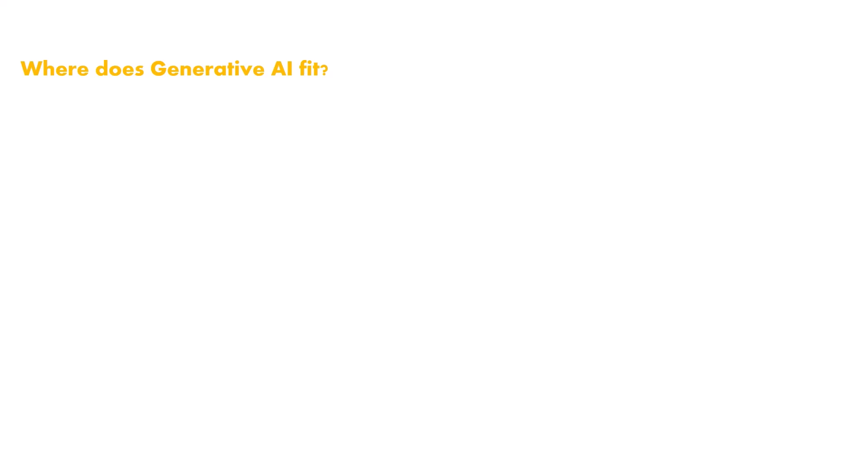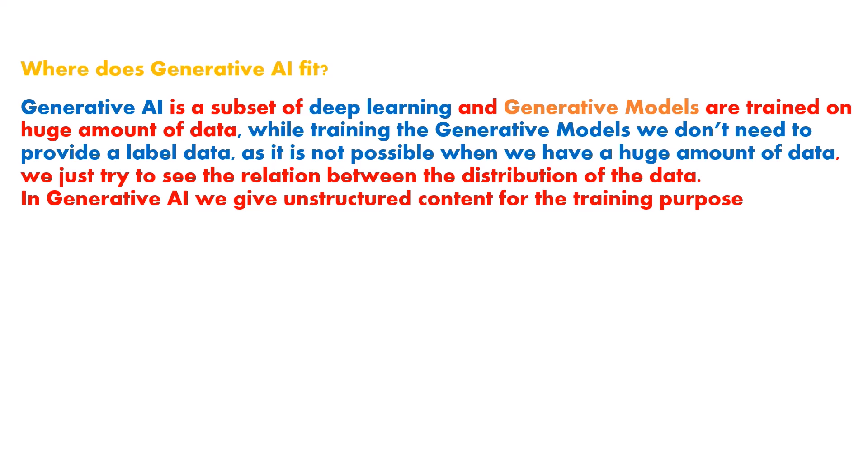Generative AI is a subset of deep learning, and generative models are trained on a huge amount of data. When training generative models, we don't need labeled data since it's not feasible with huge datasets. In generative AI, we try to find the relation between the distribution of the data. We provide unstructured, unlabeled content for training, and just find patterns in that distribution.